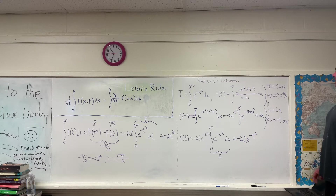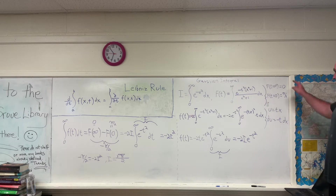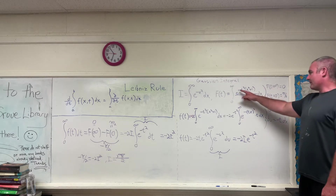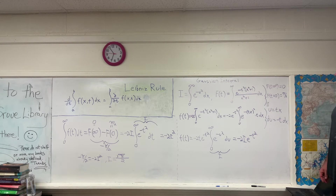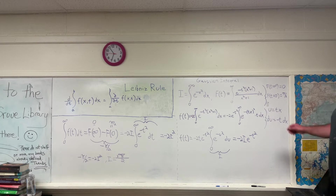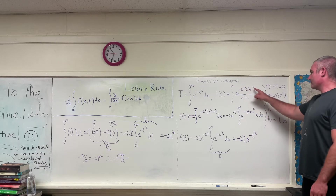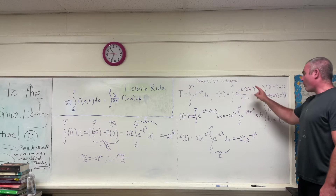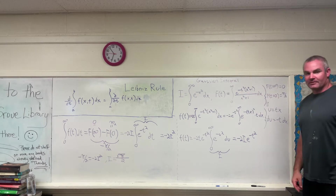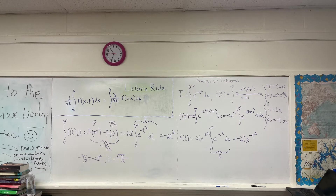We're going to make some notes here. If you evaluate big F of T at T equals infinity, you'll get zero, because we'll have negative infinity times whatever — that's going to be zero. Also, if you evaluate big F of T at zero, you get pi over two. If you plug in zero, you get one, and one over x squared plus one integrated from zero to infinity with respect to x is pi over two. That's a well-known integral — you learn it in calc one or two when you learn trig substitution.